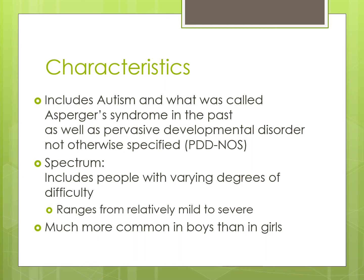Autism Spectrum Disorders includes autism, with varying levels of how strong the characteristics and symptoms are, as well as how much intellectual disability there is — just a really wide range. Now Autism Spectrum Disorders also includes what used to be called Asperger's syndrome. In the DSM-5, there's no longer Asperger's syndrome; what we used to call highly functioning autism is how they talk about it now. It also includes pervasive developmental disorder, not otherwise specified.